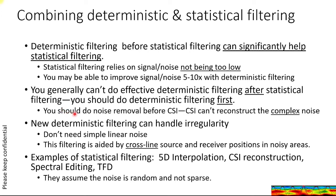You may have heard you should do noise removal before CSI — that's saying the same thing: CSI really can't reconstruct the complex noise. New deterministic filtering can handle irregularity — you don't need simple linear noise — and this filtering is also aided by the cross-line source and receiver positions.